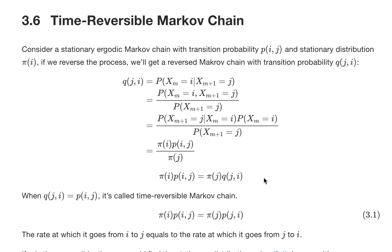Hello everyone, welcome back to my channel 'Predicting the Future'. Today's topic will continue on Markov chains, but we're going to talk about another concept called time-reversible Markov chain. Suppose we have a stationary ergodic Markov chain — if we reverse the process from x_1, x_2, ... x_n, that is, we are transitioning backwards from x_n back to x_1, that's the reverse Markov chain.